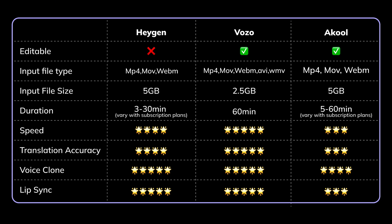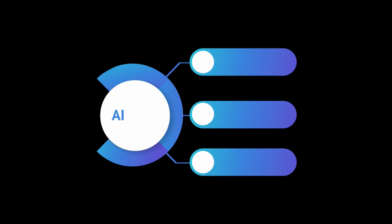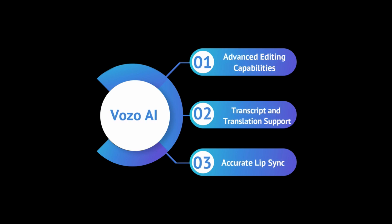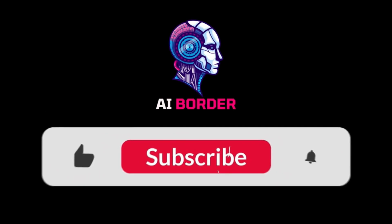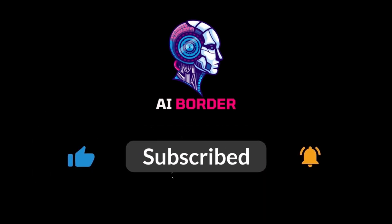In conclusion, here are the pros and cons of each tool. In the end, if I had to choose one of these three tools, my choice would be Vozo AI because of its editing capabilities, the ability to provide video transcripts and translations, and its voice and lip sync accuracy. Let me know in the comments which one you would choose. Thank you so much for watching this video until the end — if you enjoyed it, make sure to like it and subscribe to the channel. See you in the next video, bye-bye!